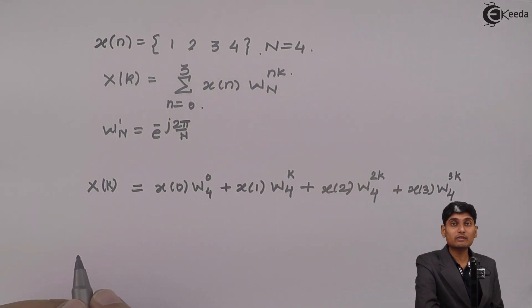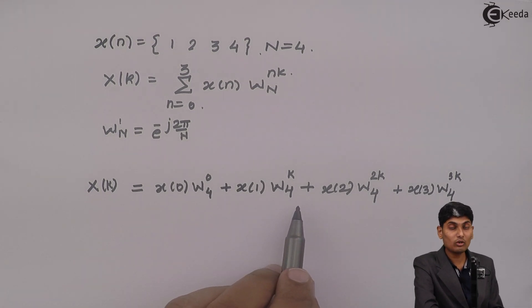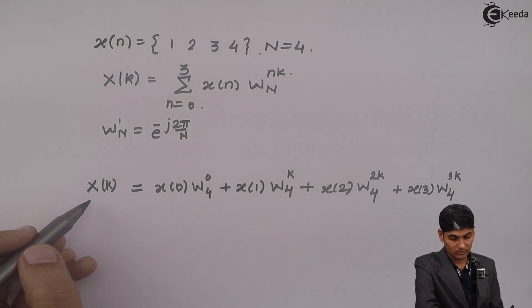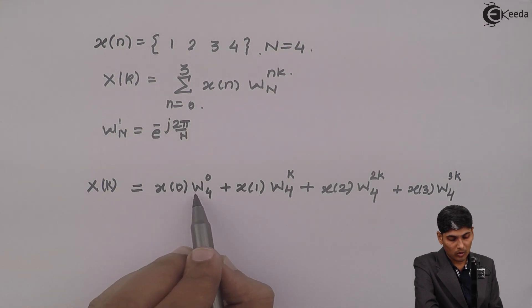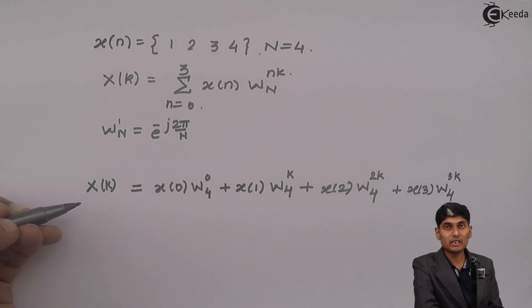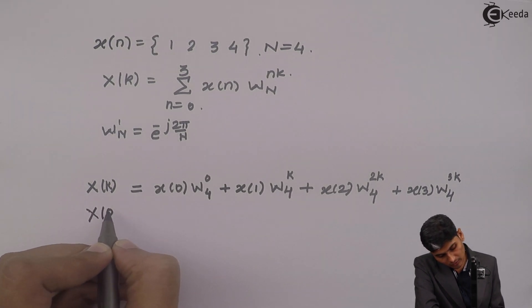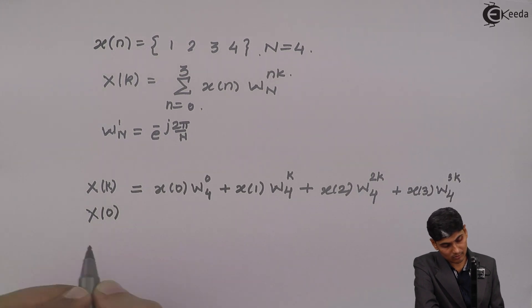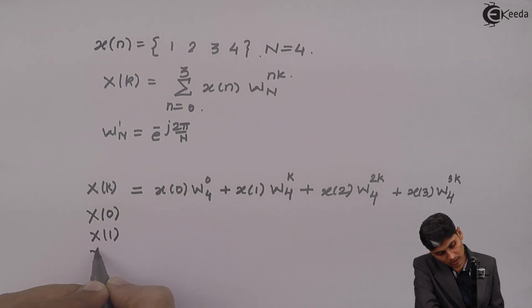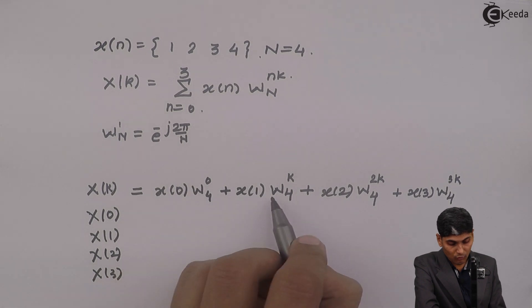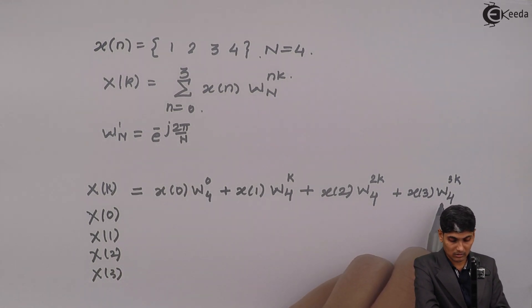So this is what the sequence is all about where each w_4 raised to k is a complex entity. Now this sequence I have to solve, so you can see there are 1, 2, 3, 4 multiplications, and this is going to repeat for 3 more times because here I will calculate x(0) for k equals 0, then k equals 1, then k equals 2, and finally k equals 3.